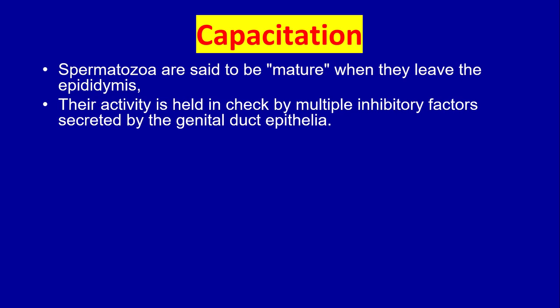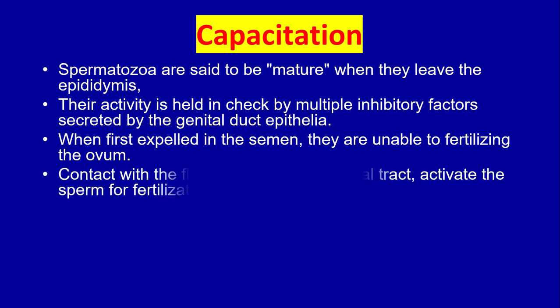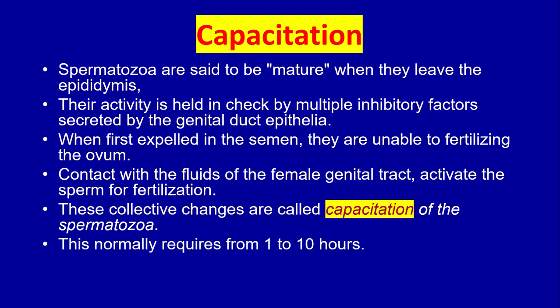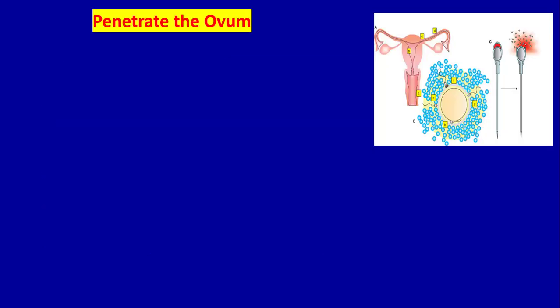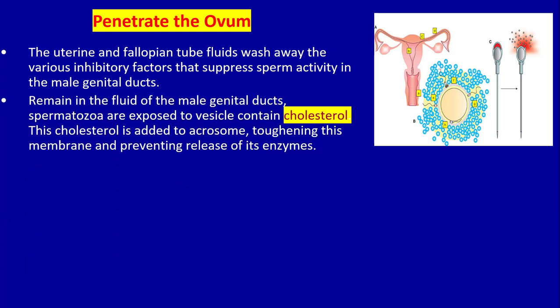Spermatozoa are said to be mature when they leave the epididymis, but their activity is held in check by multiple inhibitory factors secreted by the genital duct epithelia. When first expelled in the semen, they are unable to fertilize the ovum. Contact with the fluid of the female genital tract activates the sperm for fertilization. These collective changes are called capacitation of the spermatozoa, which normally requires 1 to 10 hours.